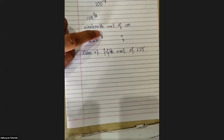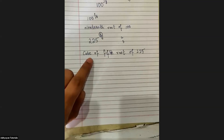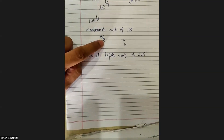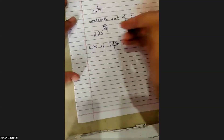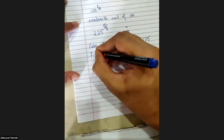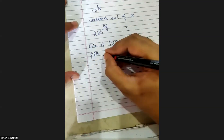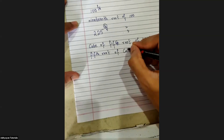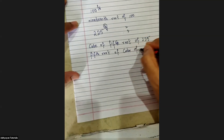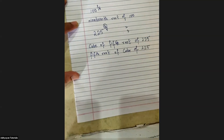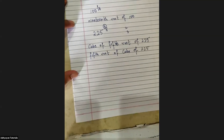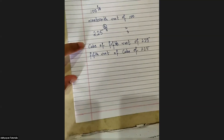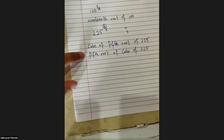I have two choices: either start with the power and then write the order — cube of fifth root of 225 — or start with the order and then write the power: fifth root of cube of 225.